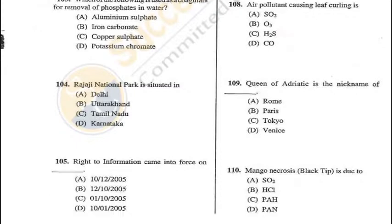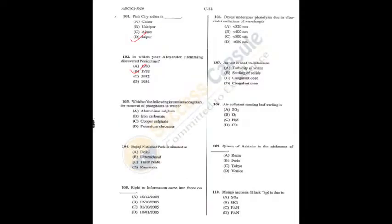Question 105: Right to Information came into force on 12th October 2005. Rajaji is in Uttarakhand and copper sulfate is the coagulant — C is the answer.